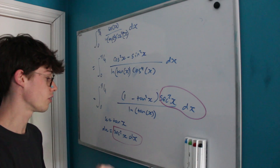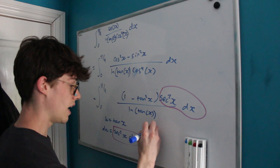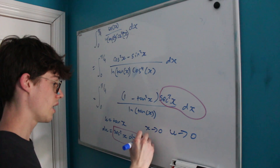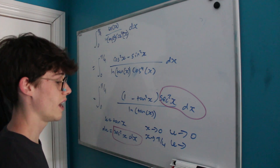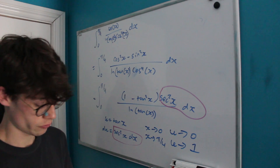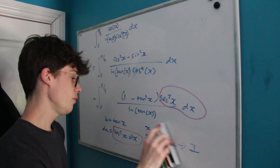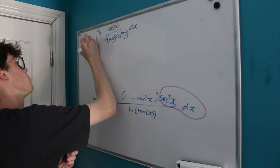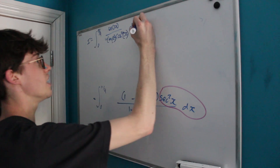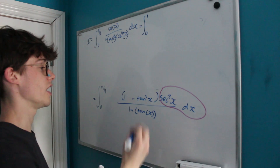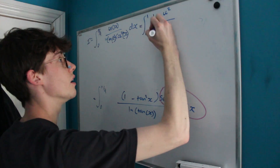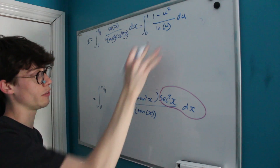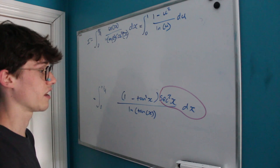Now let's look at the bounds. As x goes to 0, tan(x) also goes to 0, and as x goes to π/4, tan(x) approaches 1 since tan(π/4) = 1. After making our substitution and clearing some space, I'll call our integral I. It becomes the integral from 0 to 1 of (1 minus u²) divided by ln(u) with respect to u — swapping tan for u and replacing sec²x dx with du.